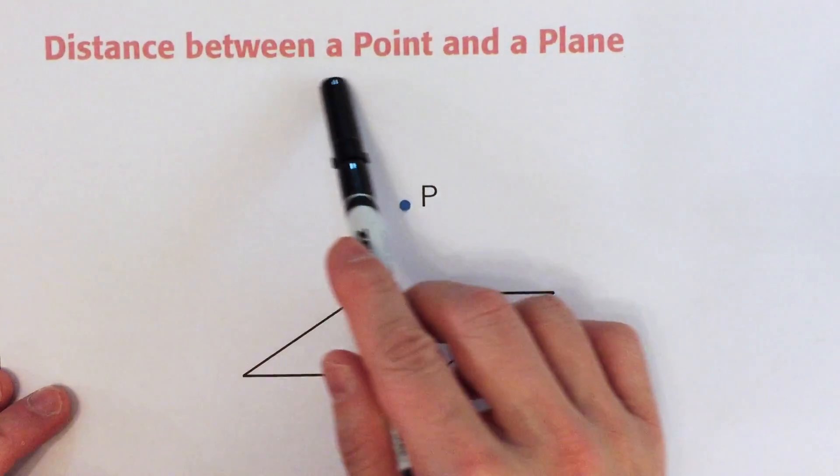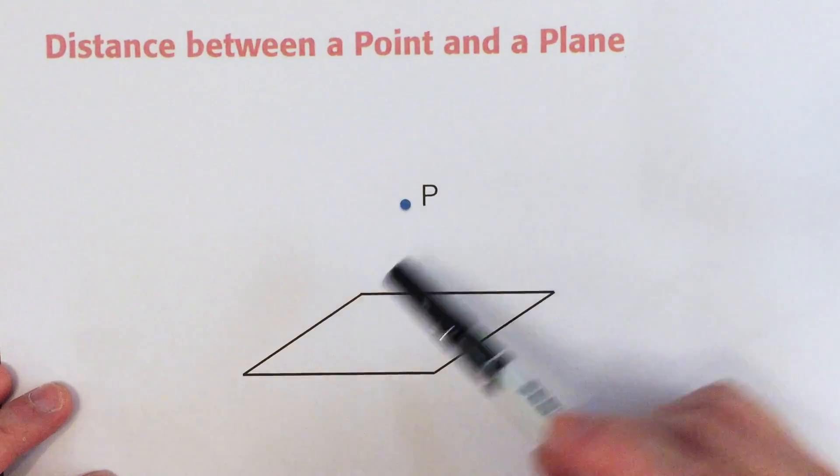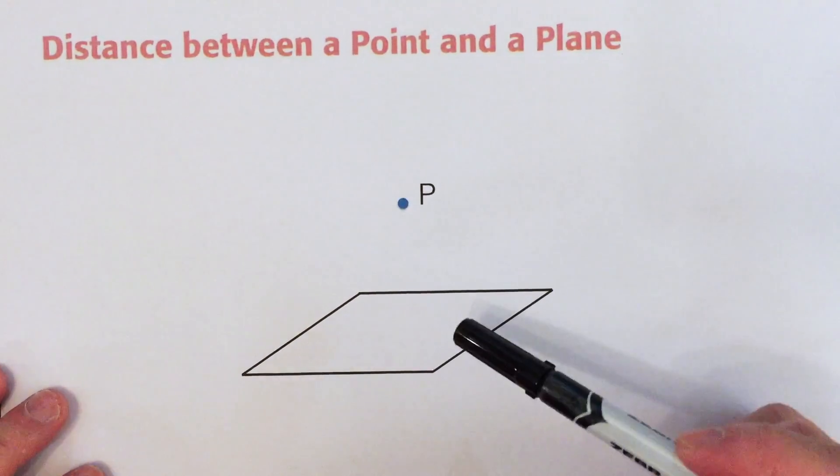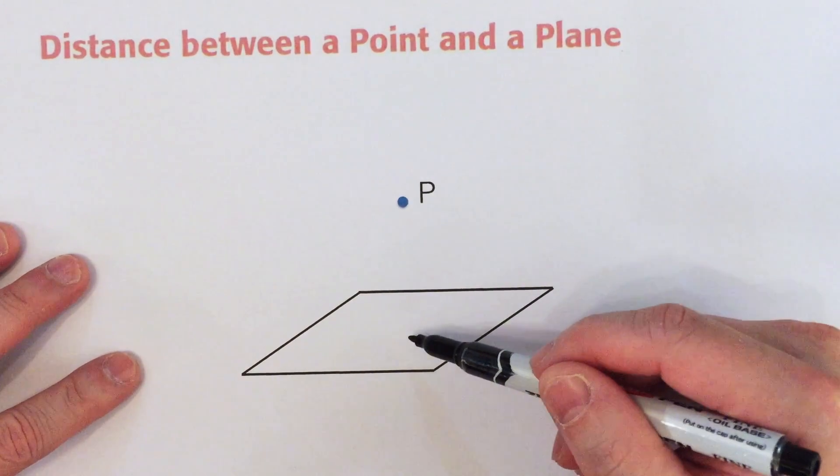Finding the distance between a point and a plane. Suppose this is point P and this is a horizontal plane, and now we are going to find the distance of this point from this plane.